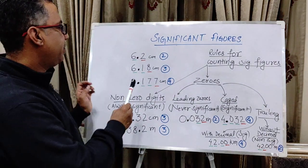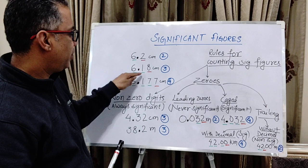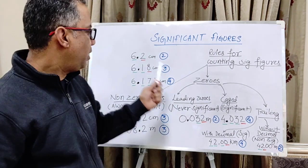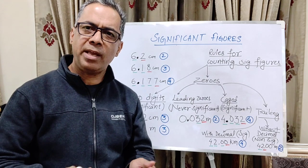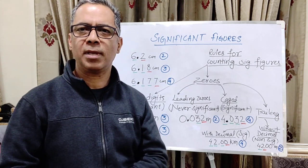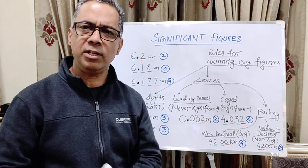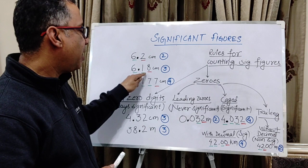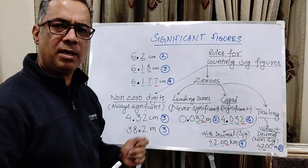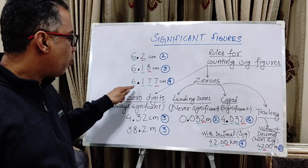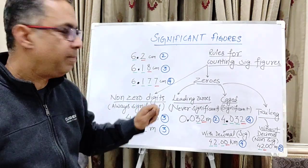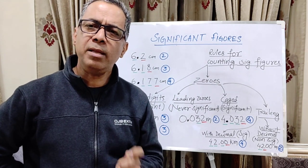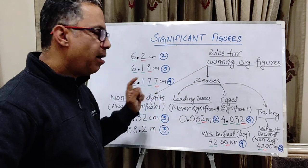What we notice is that the last digit — the 2 — has changed; it has become 1 and we have an additional digit 8. So the last digit in any measured value can change if we bring a more accurate, more precise instrument. Similarly, if we bring in an instrument that can measure up to three decimal places, the same person might measure this quantity as 6.177 centimetres, with this digit again undergoing a change. So the last digit in any measured quantity is going to be uncertain.